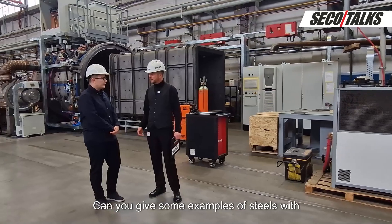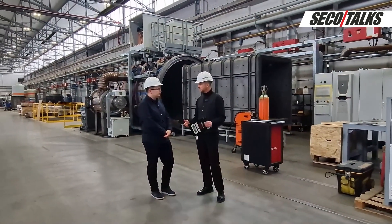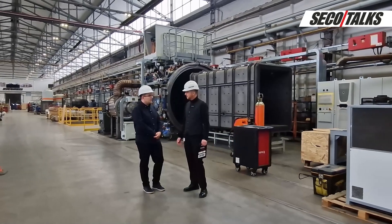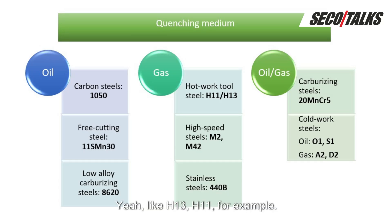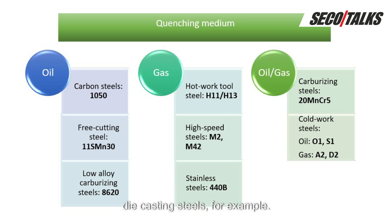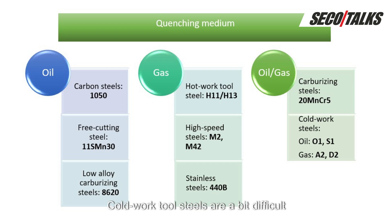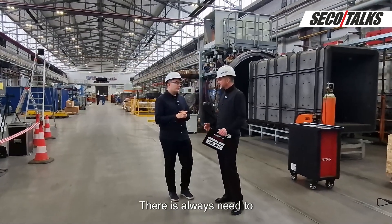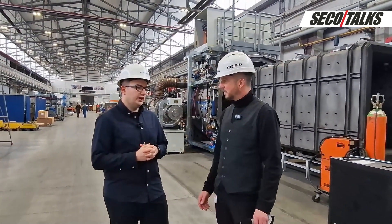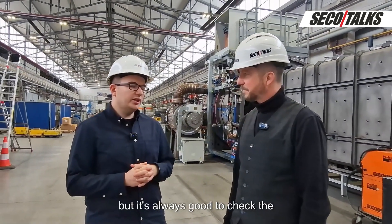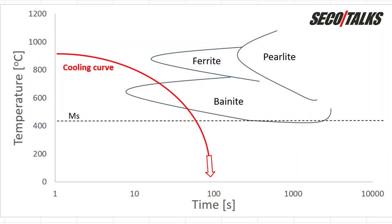Can you give some examples of steels with enough hardenability for high pressure gas quenching? Tool steels are a good example — like H13 and H11, which are typical die casting steels. Cold work tool steels are a bit more difficult; there are some examples that can be hardened in gas, but it is always necessary to have a competent person to suggest which method will be better. It is always good to check the transformation temperature diagram for each steel.